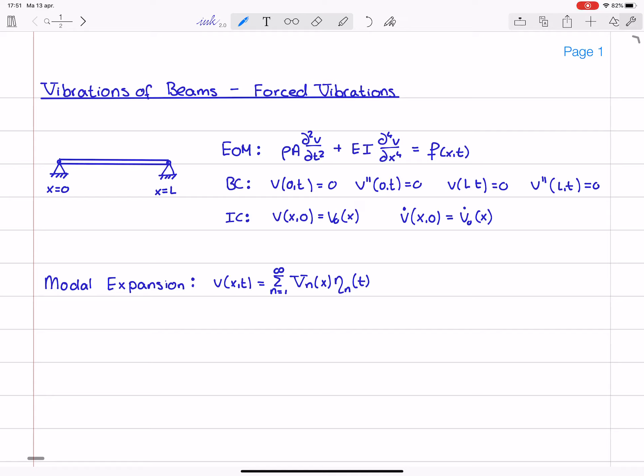Once you have them you mass normalize them and you substitute it into the equation of motion. To obtain sum of i is 1 to infinity, rho a, v i, eta i double dot, plus the infinite sum of e i times v i fourth derivative times eta i itself. And this is equal to the right hand side f.